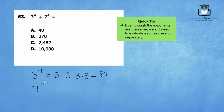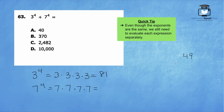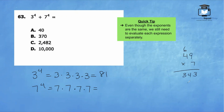7 to the 4th power is 7 times 7 times 7 times 7. 7 times 7 is 49, and then we multiply 49 times another 7. 7 times 9 is 63, 7 times 4 is 28, 28 plus 6 is 34. So we have 343 for 7 to the 3rd power. Now we're going to multiply 343 times 7 one more time.